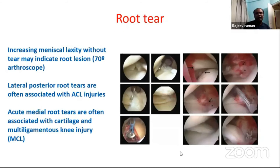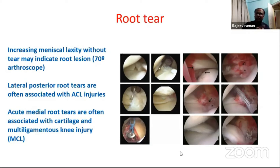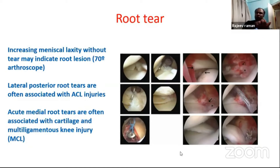Root tear — for the last three years we have been repairing many root tears. Earlier we missed them because we thought that if the root was intact after probing, it was fine. But that's not correct. Put your probe inside and try to hook the meniscus. If more than 30% of the meniscus is coming inside the joint, that is called a lax meniscus — an indirect sign of root tear. So once you get a lax posterior root, try to repair this root. Otherwise the patient will return with a locking episode, painful knee, or a click. Most lateral posterior root tears are associated with ACL injuries.